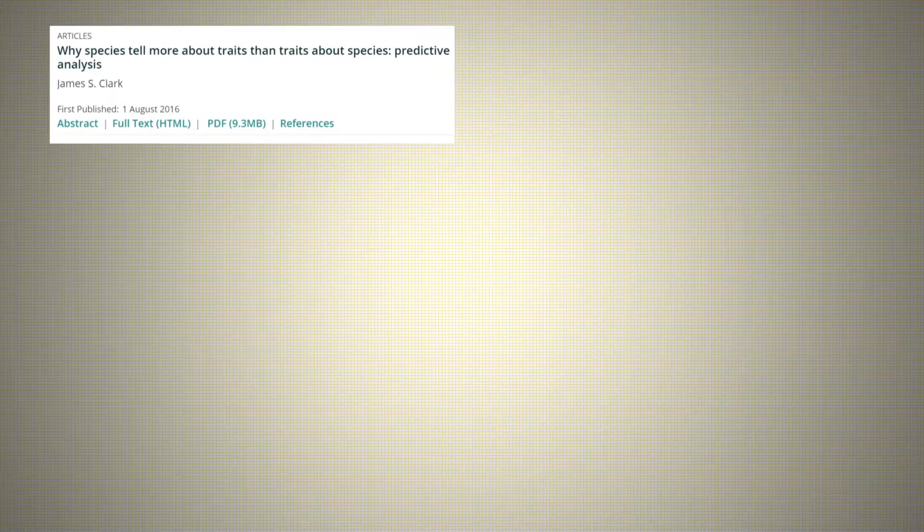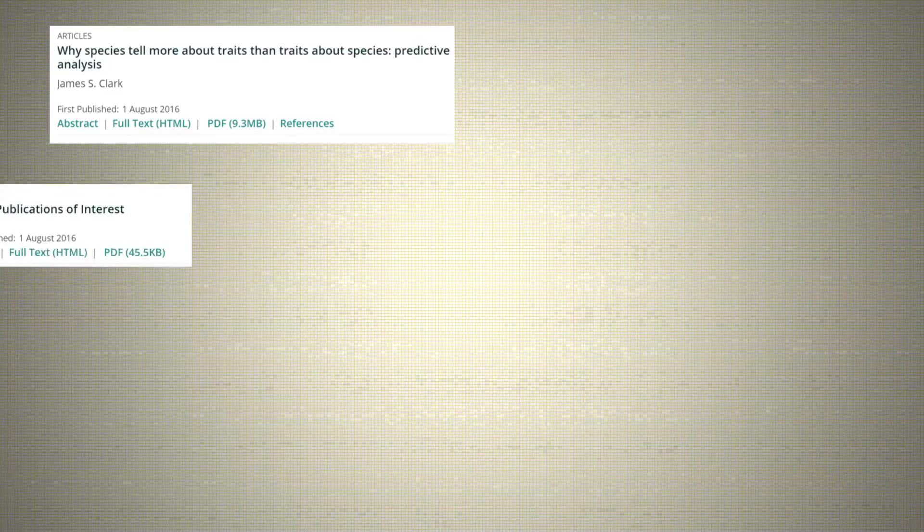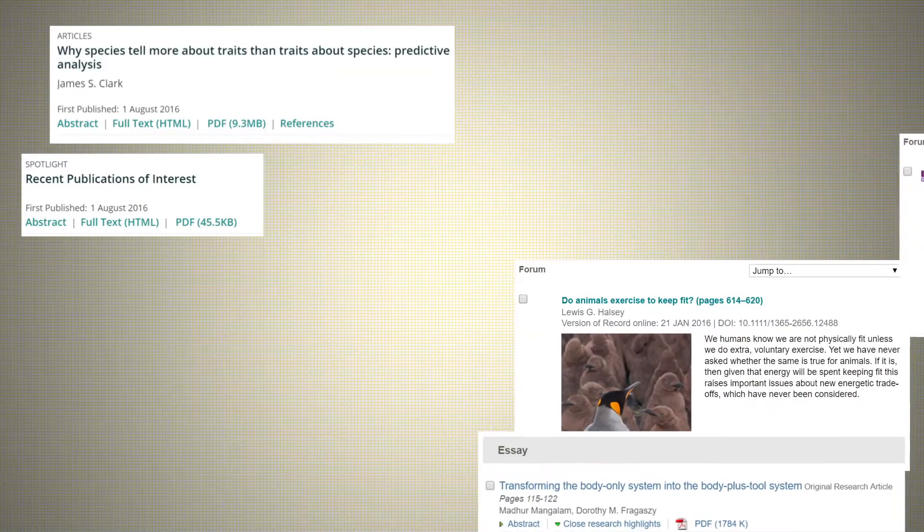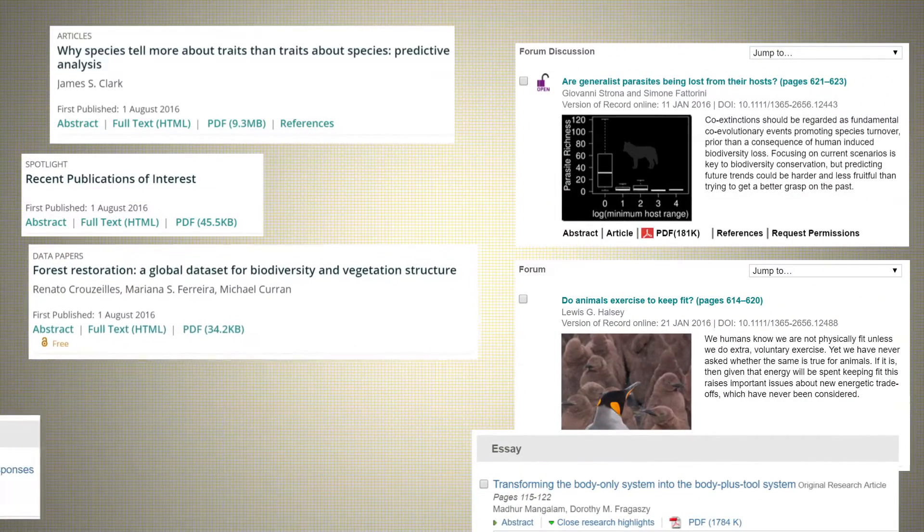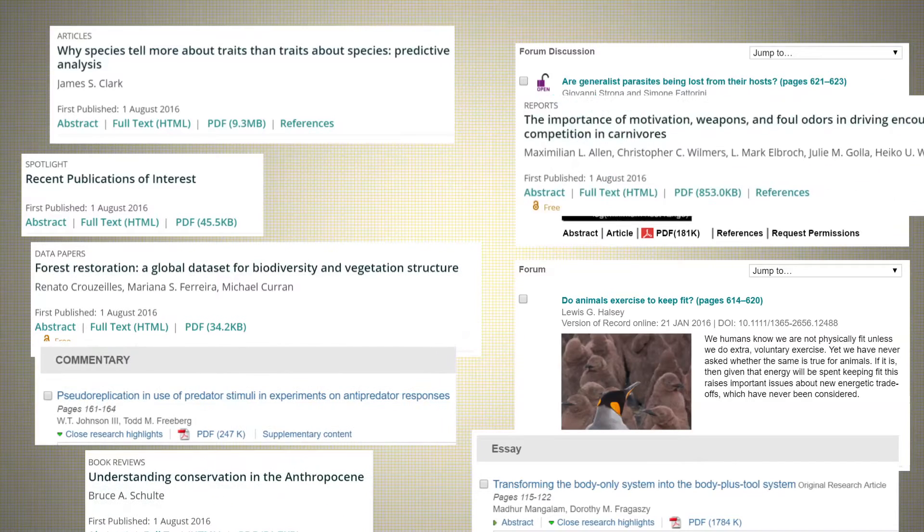However, journals often publish many types of articles. Most of these are traditional research papers, but journals also include recent news, editorials, comments, and more. These different articles are in a grey zone. Are they considered citable?